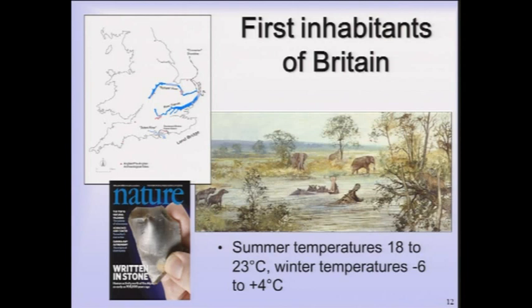One key site is at Pakefield near Lowestoft, where flint flakes have been recovered. Around this time, say 650,000 years ago, we had an almost Mediterranean climate — warm summers well in excess of mean temperatures. In this part of Britain, mean summer temperatures were around 16 degrees centigrade, with summer temperatures between 18 and 23 degrees. We can tell this from fossil beetles, soil carbonate, and mild winters of minus six to plus four. There is also tentative evidence of human occupation in excess of 700,000 to 750,000 years ago, though these sites are still under investigation.